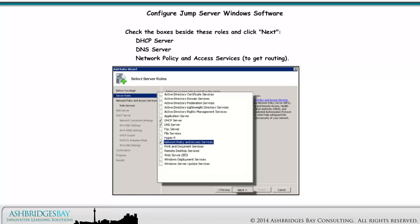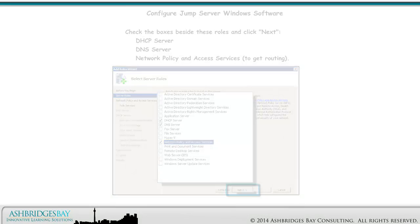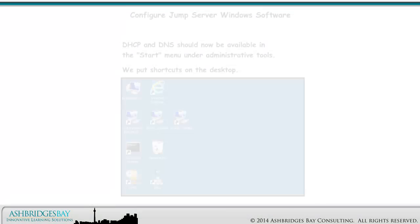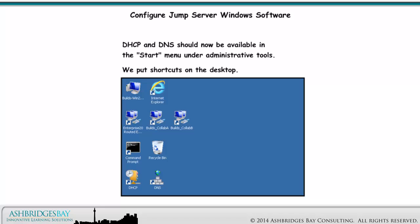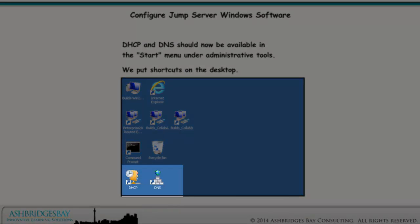Check the boxes beside these roles: DHCP Server, DNS Server, and Network Policy and Access Server (to get routing), then click Next. DHCP and DNS should now be available in the Start menu under Administrative Tools. We put shortcuts on the desktop.